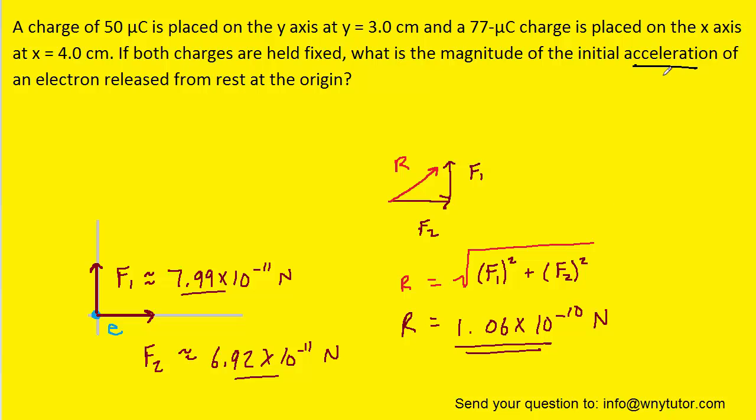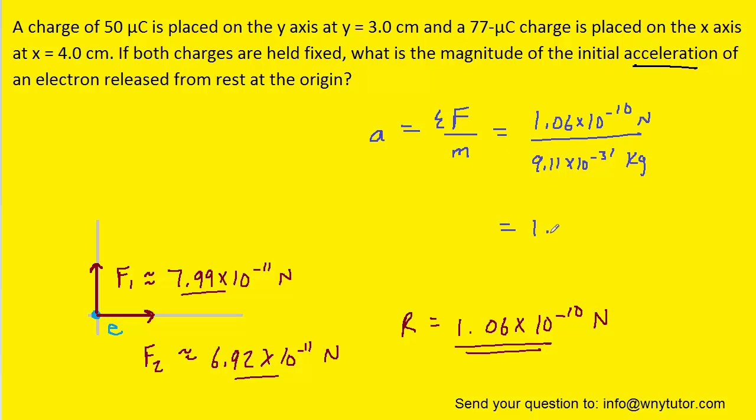We need the acceleration. To calculate that, we recall that acceleration equals the net force divided by the mass of the electron. We'll plug in the net force we just determined and the mass of the electron. When we calculate that, the acceleration magnitude turns out to be rather large: 1.16 times 10 to the 20th meters per second squared.